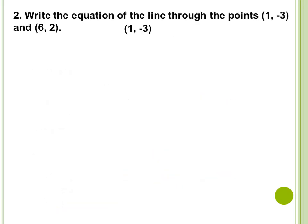Another example. For our second example, we have: write the equation of the line through the points (1, negative 3) and (6, 2). The first step, you need to assign values for x sub 1, y sub 1, x sub 2, y sub 2. So, kahit alin sa dalawang points na ito ang gawin nating x sub 1, y sub 1, x sub 2, y sub 2, same pa rin ang magiging sagot natin sa pinakang huling part or process of this equation. Now, x sub 1, y sub 1, x sub 2, y sub 2 — we just assigned their values.